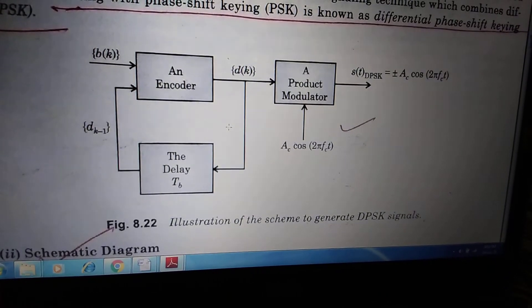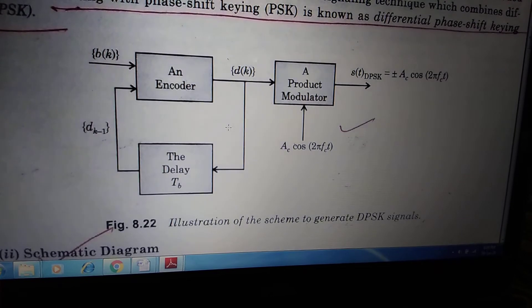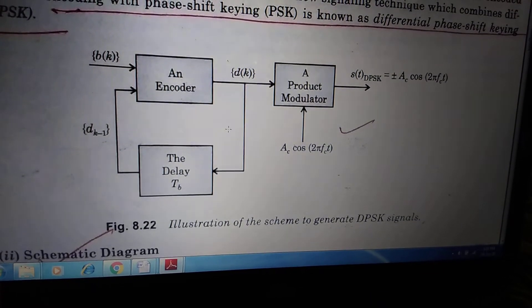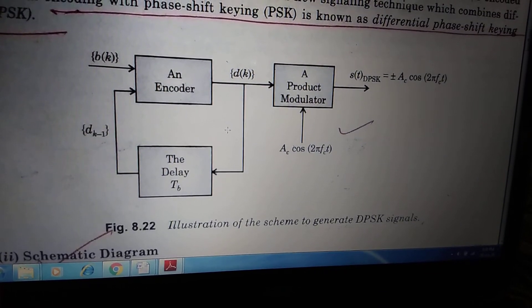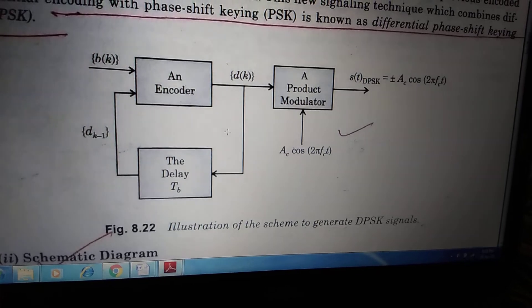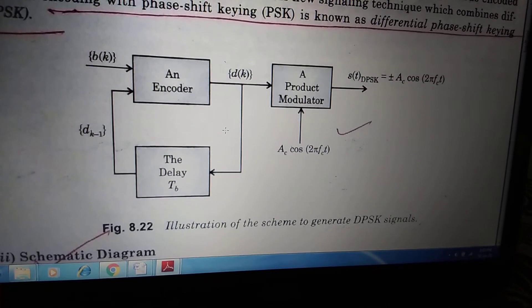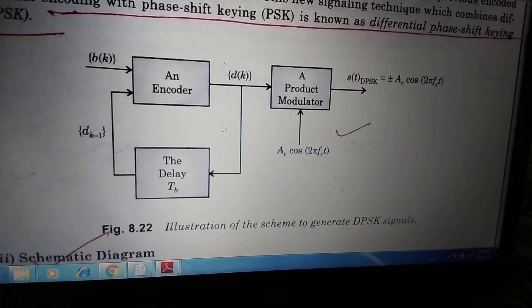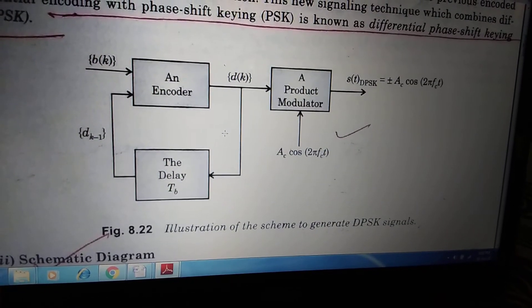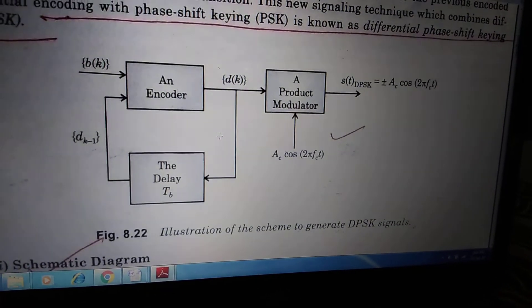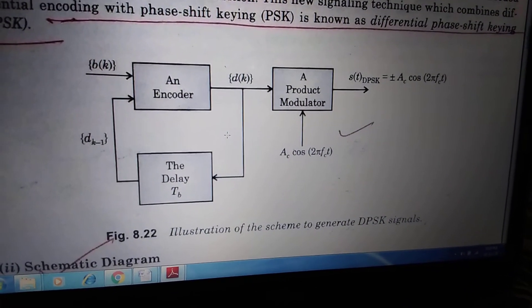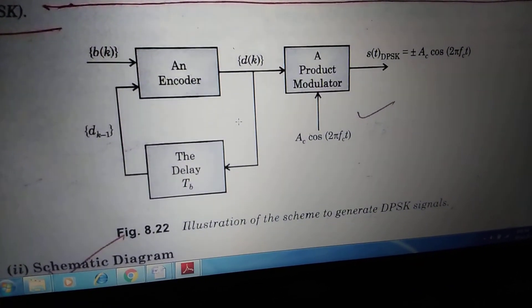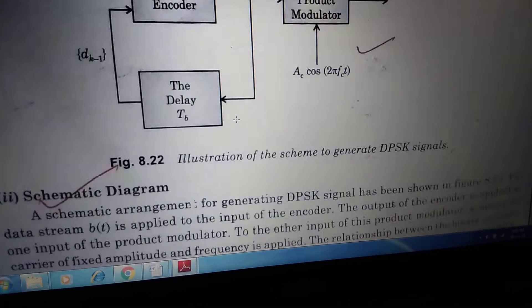This particular D of K will be given to a product modulator. Another signal that should be fed to the modulator is AC cos of 2 pi FCT. That is the carrier signal that we will use in this case of the product modulator. And we are getting the modulated DPSK signal, that is called the S of T of DPSK, that is equals to plus minus AC cos of 2 pi FCT. That is the generalized block diagram of the DPSK system.